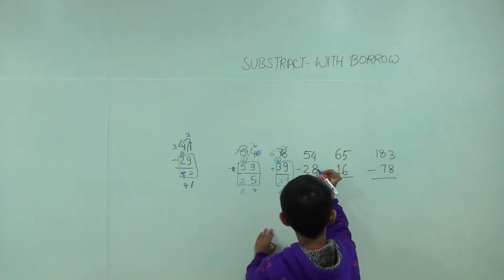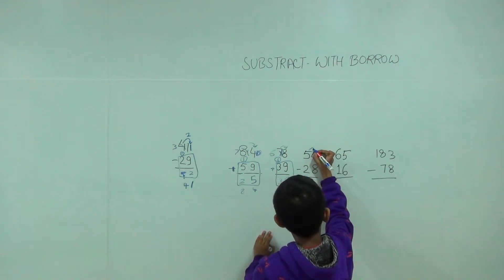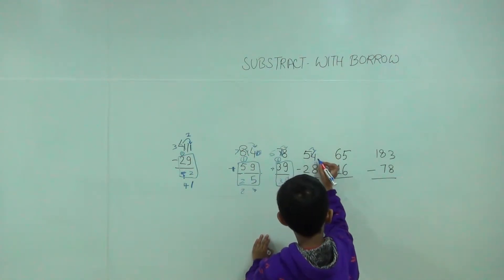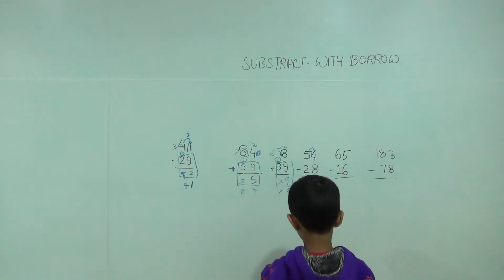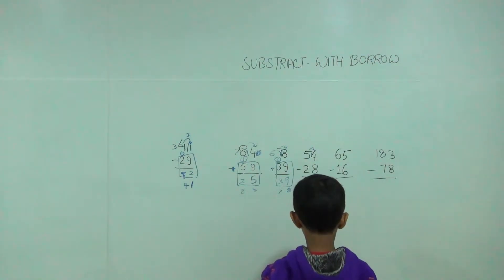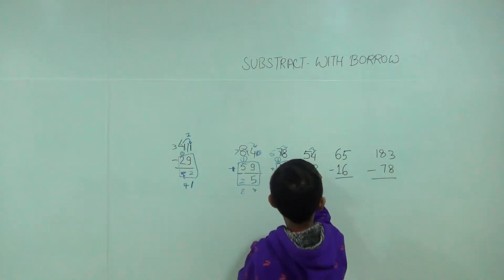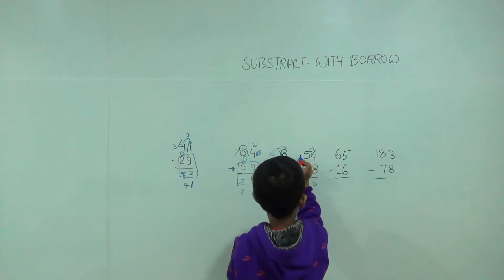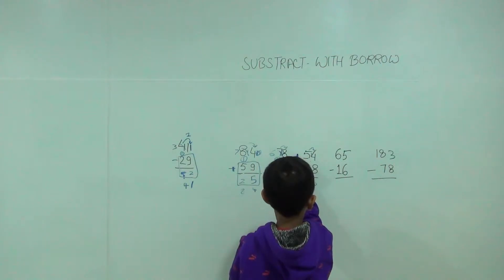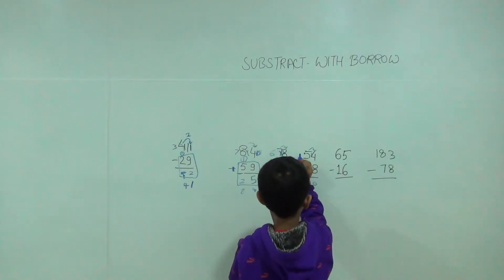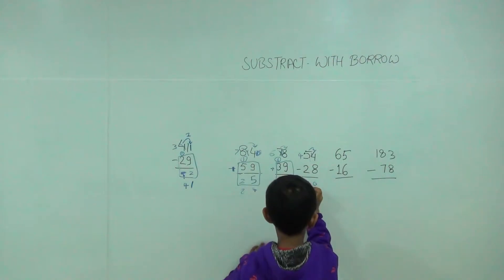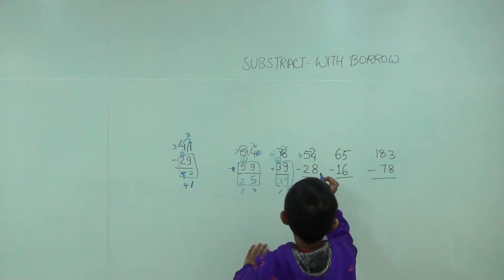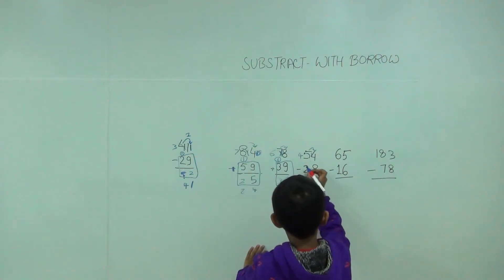The number is less than it, so we will give 1 here, so it will become 14. 14 minus 8 is equal to 6. So it will become 4, and 4 minus 2 is 2. So the answer would be 26. We will check.